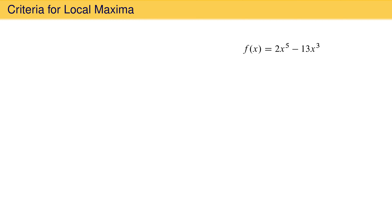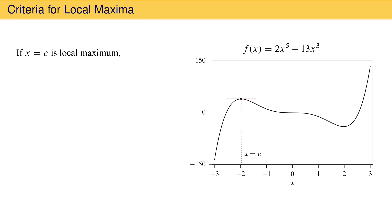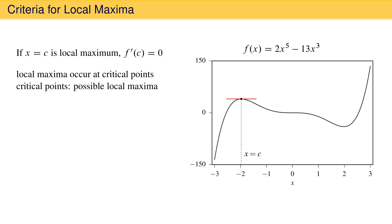Let's again look at the function 2x to the fifth minus 13x cubed from minus 3 to 3. We have already identified the point near x equal minus 2 as a local maximum. Let's call this point c. You will notice that the straight line tangent to the curve at this point is horizontal, indicating a first derivative equal to zero. If some point such as x equals c is a local maximum, it will always be true that the first derivative of the function at that point will be zero. In other words, local maxima occur at critical points. But not all critical points are local maxima — critical points are possible or candidate local maxima that must be checked.